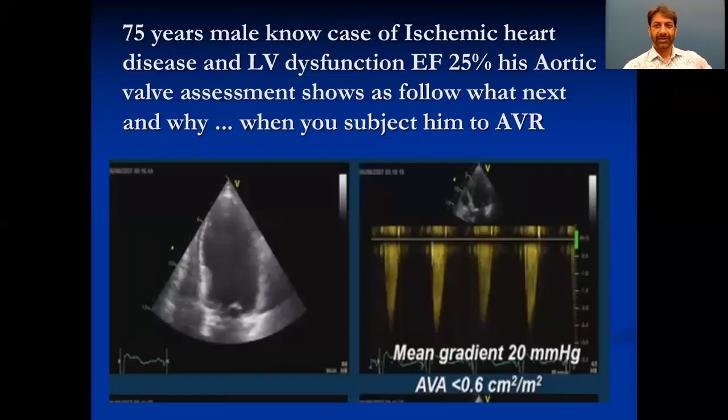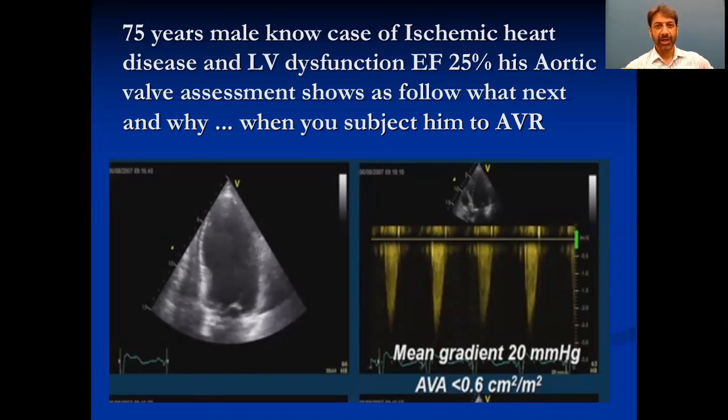Bismillahirrahmanirrahim. A few days back, I posed a question in cardiology trainees and trainer forums. The question was: you have a 75-year-old, known case of systemic heart disease, with analytic dysfunction, EF 24%, and this aortic valve assessment shows as follows. What next and why?